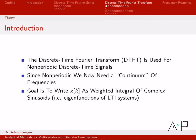What we're going to see is that we now need basically a whole continuum of frequencies. For the DTFS, since we were dealing with periodic signals, we only needed the fundamental frequency and its harmonics — two times, three times the fundamental frequency, etc. Now when we write down x of k, we're actually going to write it as a weighted integral, integrating up a contribution from every frequency. The DTFT lets us write x of k in a conceptually similar manner — still a weighted summation of complex exponentials. So let's go ahead and derive that equation.